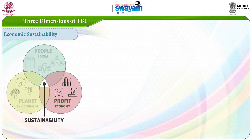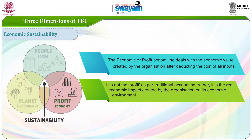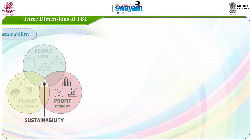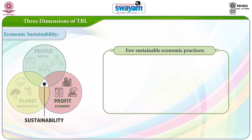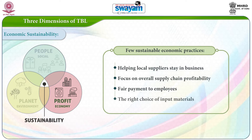The last dimension of TBL is economic sustainability. The economic or profit bottom line deals with the economic value created by the organization after deducting the cost of all inputs. It is not the profit as per traditional accounting. Rather, it is the real economic impact created by the organization on its economic environment. Sustainable economic practices include helping local suppliers stay in business, focus on overall supply chain profitability, fair payment to employees, and the right choice of input materials.